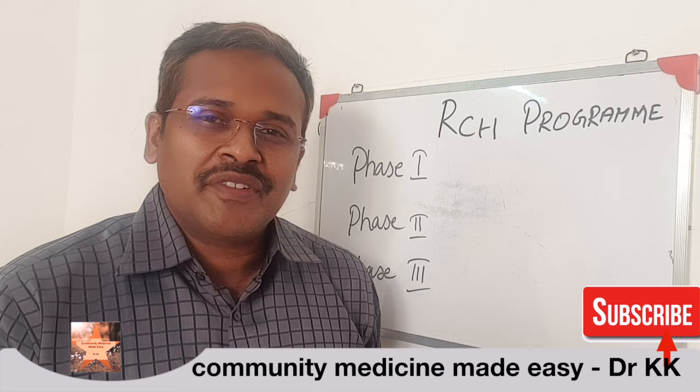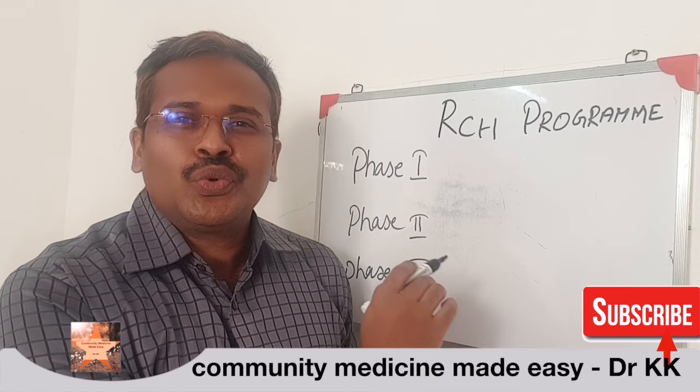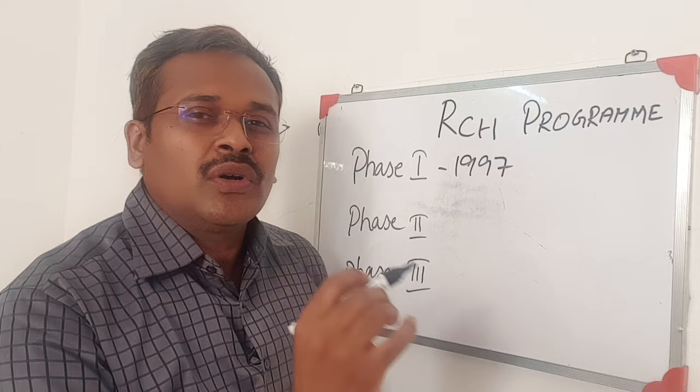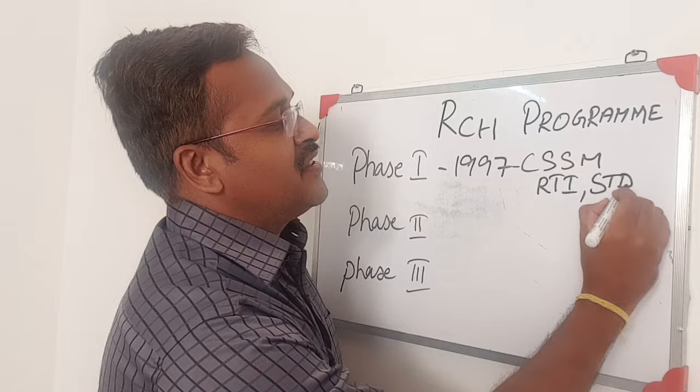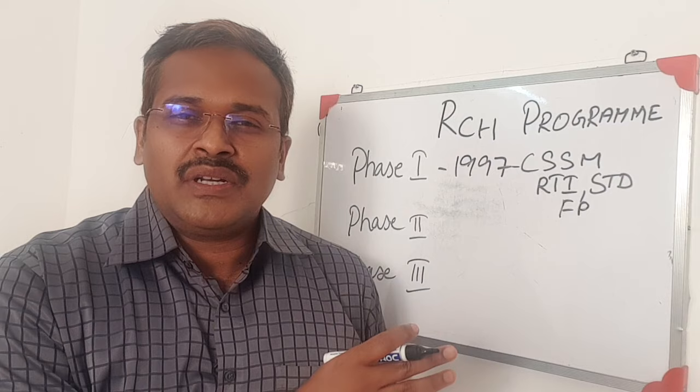RCH program mainly has three phases: phase 1, phase 2, and phase 3. Phase 1 was started in the year 1997. The main components covered are child survival and safe motherhood, reproductive tract infections and sexually transmitted diseases, and family planning. These are the main areas covered under phase 1.